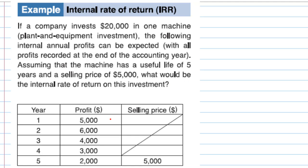We are given the profit at the end of the first year is $5,000, profit at the end of second year is $6,000, profit at the end of third year is $4,000, profit at the end of fourth year is $3,000, and profit at the end of fifth year is $2,000 plus the selling price of $5,000.